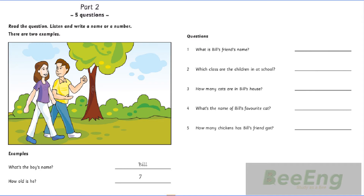4. Which is your favourite cat, Bill? Oh. Sam is my favourite. He's sleeping now. How do you spell the cat's name? S-A-M. That's a good name for a cat.